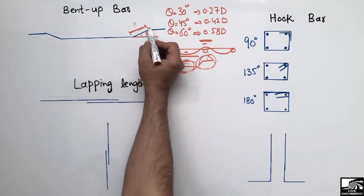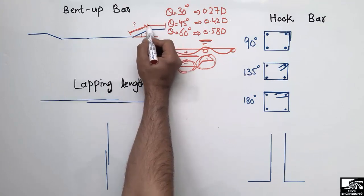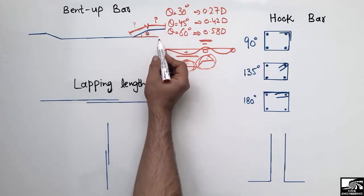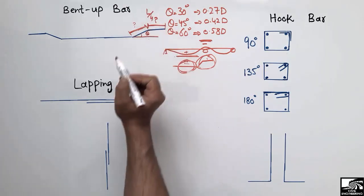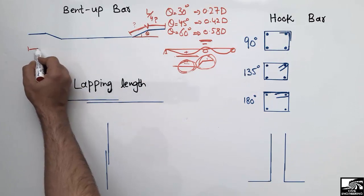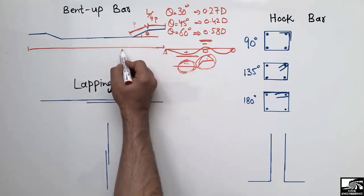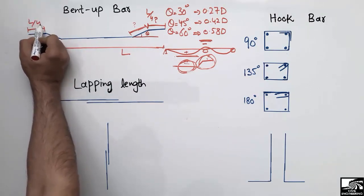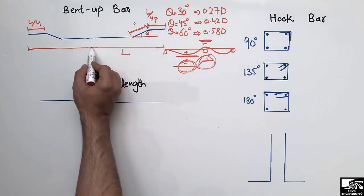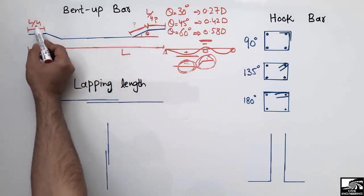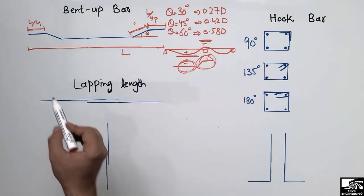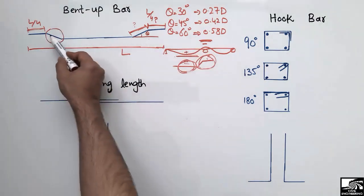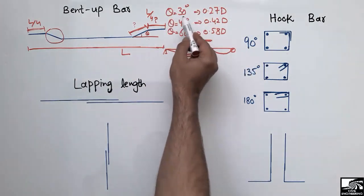The position of the bent-up bar along the beam — specifically the horizontal length from the support to the bend — should be equal to L/4, where L is the total span length of the beam. By dividing the total length by 4 we can determine this dimension. The bent length itself depends on the three angle criteria discussed above.